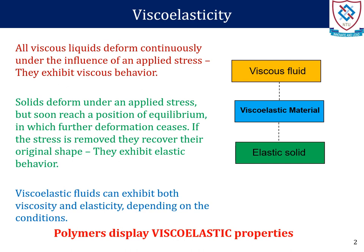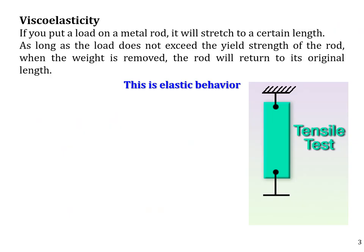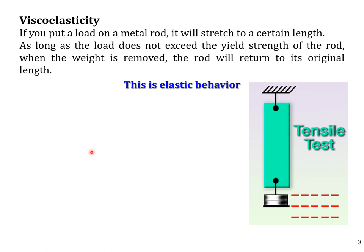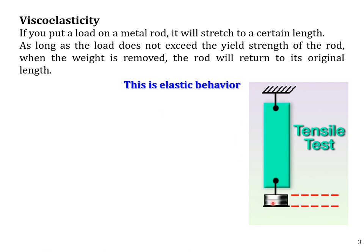In general, polymers display viscoelastic properties above their glass transition temperature. For elastic behaviour — which we have gone through in earlier lectures — if we put a load on a metallic rod, it will stretch to a certain length. If we remove the load, it will come back to its original length immediately.